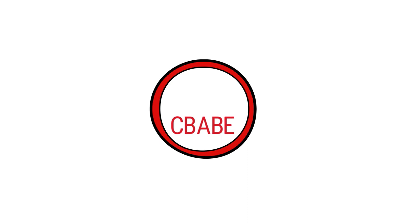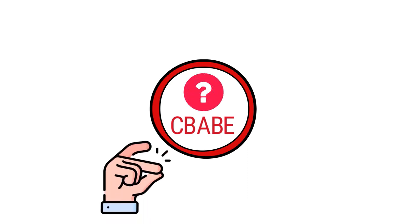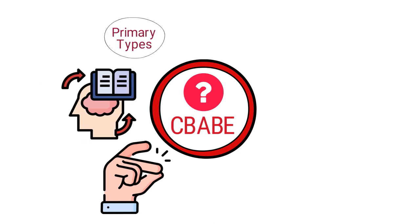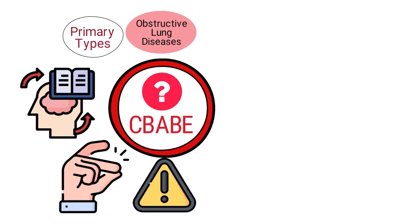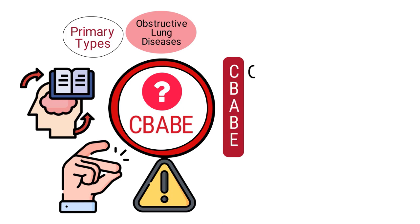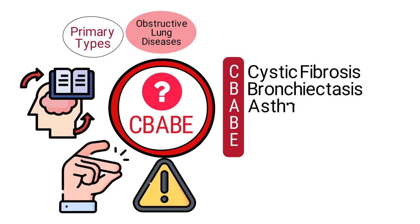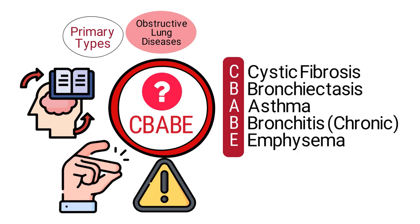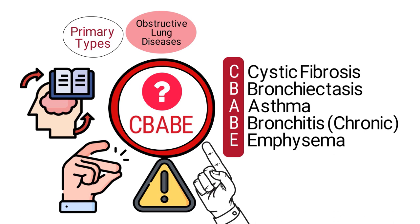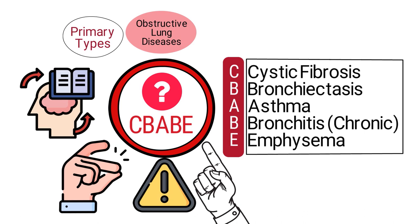First and foremost, let's talk about CBAPE. CBAPE serves as a mnemonic designed to make it easier to memorize the primary types of obstructive lung diseases. Each letter in CBAPE stands for a distinct disorder: C stands for cystic fibrosis, B for bronchiectasis, A stands for asthma, B stands for chronic bronchitis, and E stands for emphysema. By remembering CBAPE, you have a handy tool to quickly identify and categorize the main diseases that fall under the obstructive lung disease umbrella.